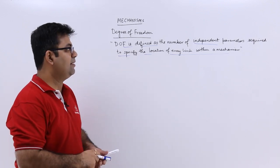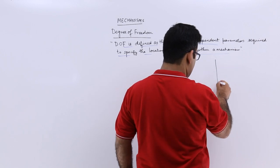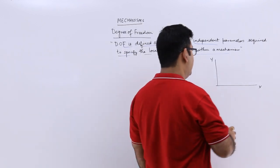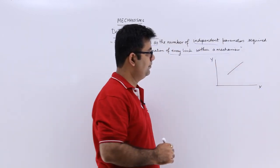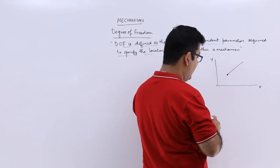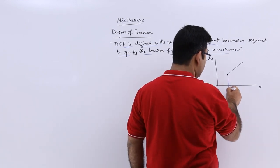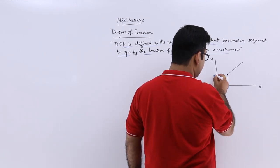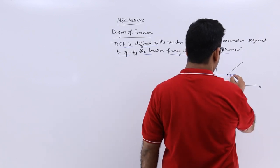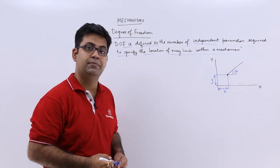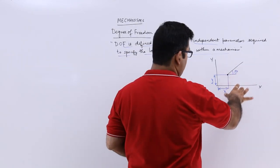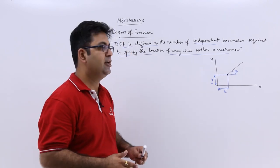For example, if you take a coordinate plane x-y and I have a line in this plane. If I have to specify the position of this line, I would need to specify the distances from the two axes. This is x and this is y, and I would also need to specify the angle theta. So I need three parameters minimum to specify the location of this line in this coordinate plane.